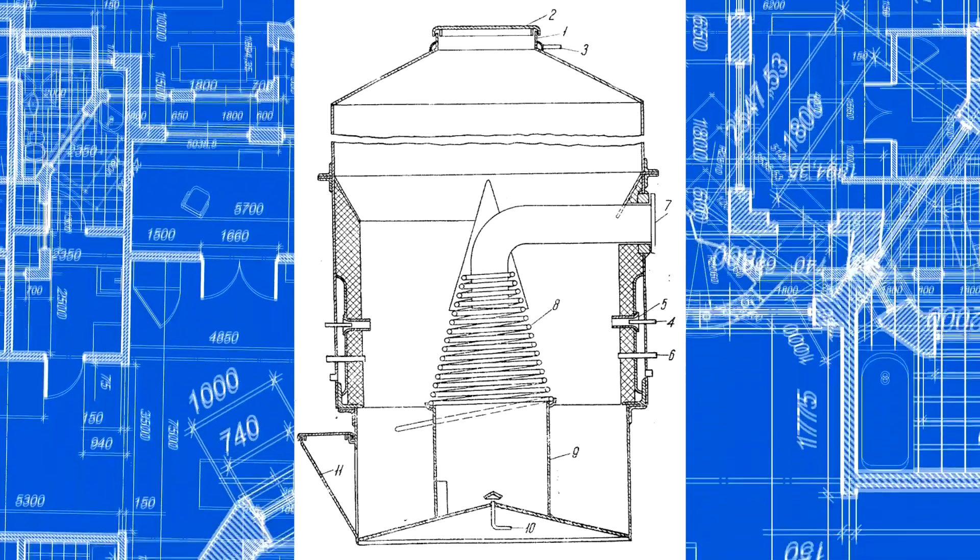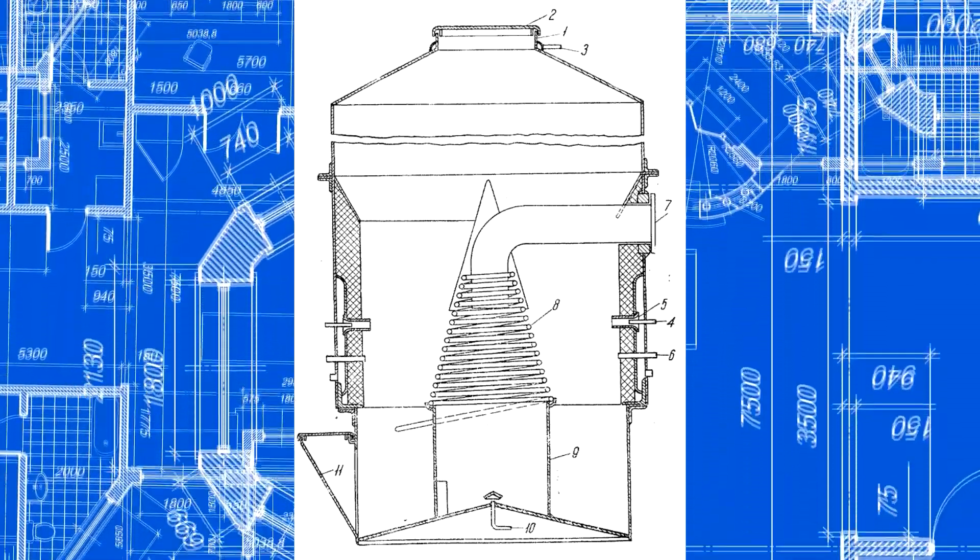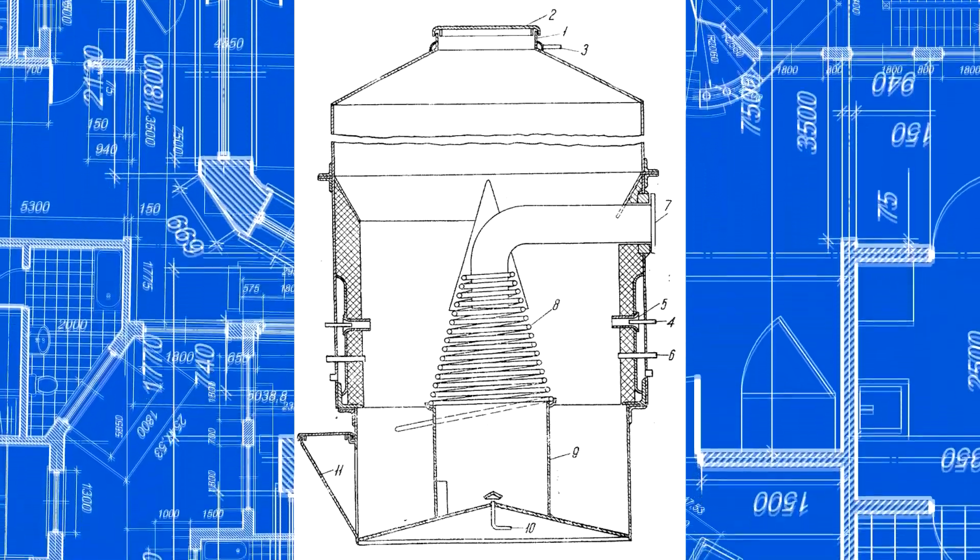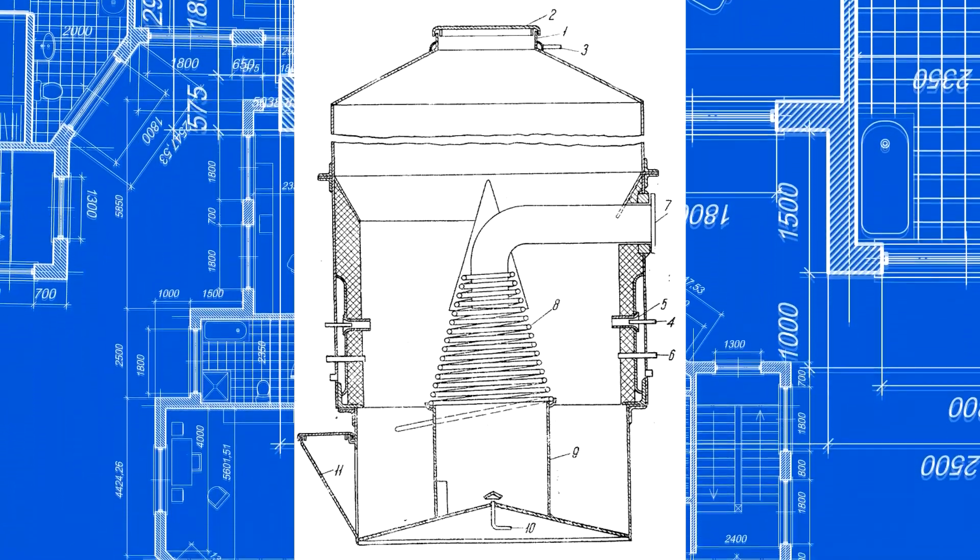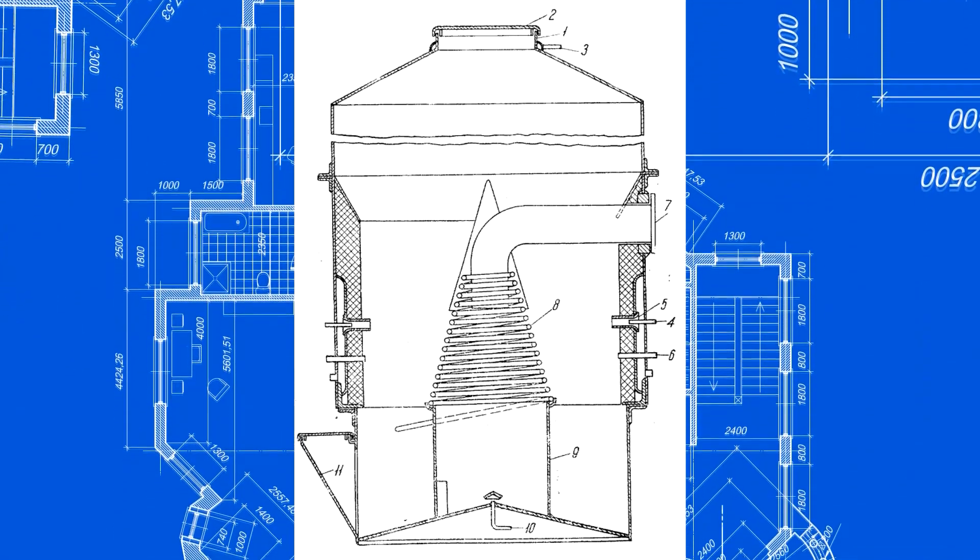Secondly, he removed the grate, which ash stuck to from time to time and had to be cleaned. He replaced it with a heating spiral. Its coils are located close to each other not allowing fuel to fall behind it.